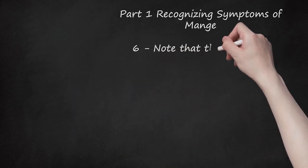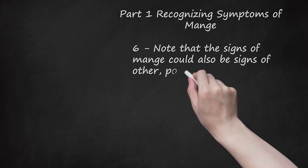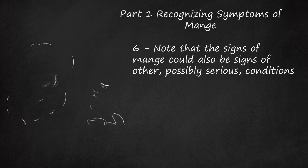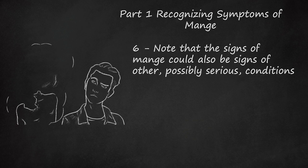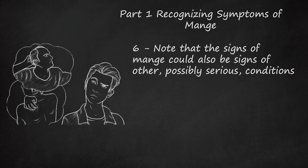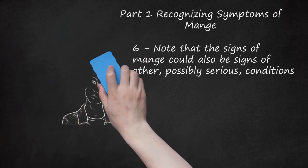Note that humans cannot get the type of mites that cause demodectic mange. Also note that the signs of mange could also be signs of other, possibly serious, conditions. Itching or patchy hair loss are also symptoms of other underlying health issues, such as allergies, hyperadrenocorticism (Cushing's disease), diabetes, hyperthyroidism, and parasite infection. Therefore, it is important to consult your veterinarian about the problem in order to get a proper diagnosis and treatment.